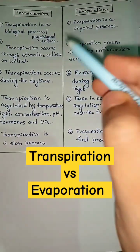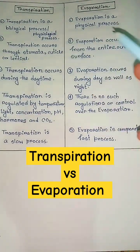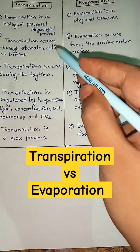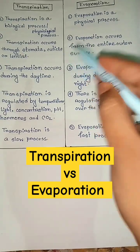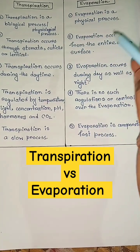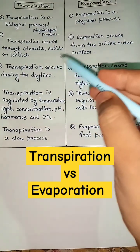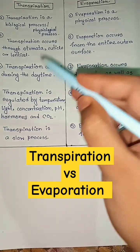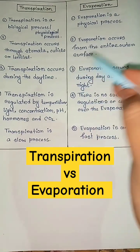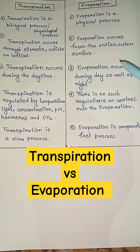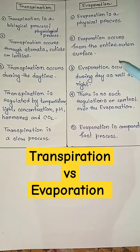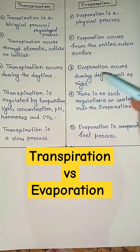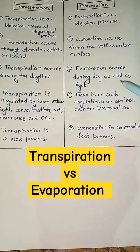Differences between transpiration and evaporation: transpiration is a biological or physiological process, while evaporation is a physical process. Transpiration occurs through stomata, cuticle, and lenticels, whereas evaporation occurs from the entire outer surface. Transpiration occurs during the daytime, but evaporation occurs during day as well as night.